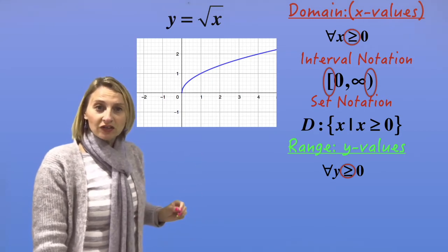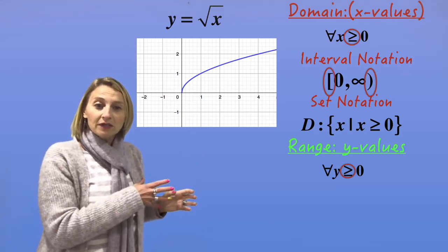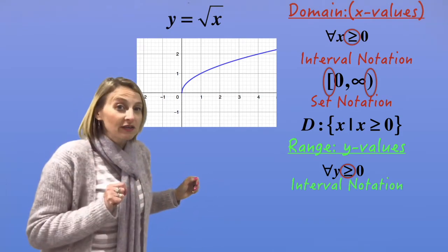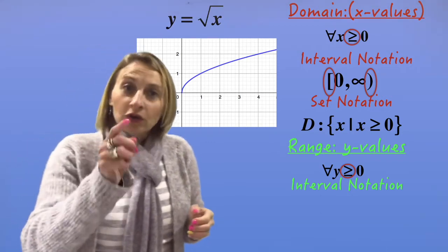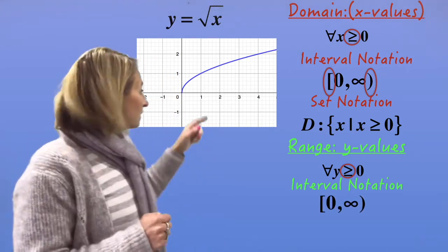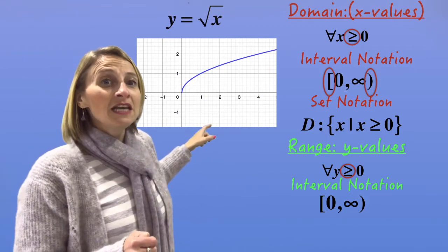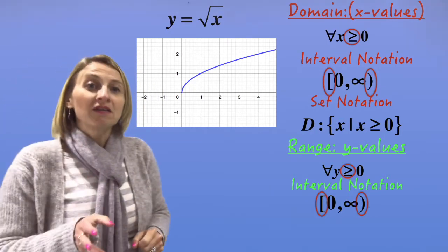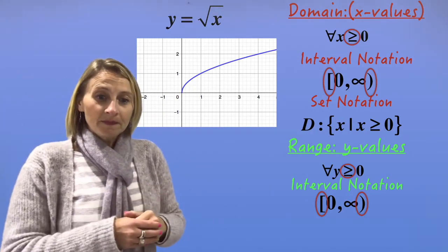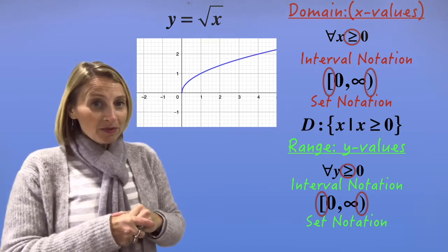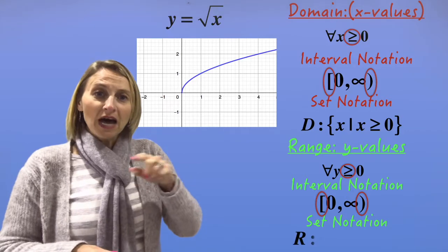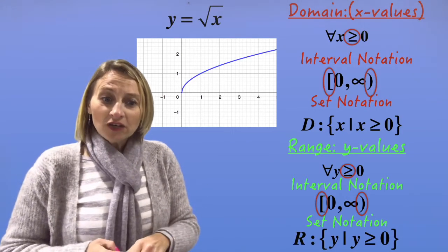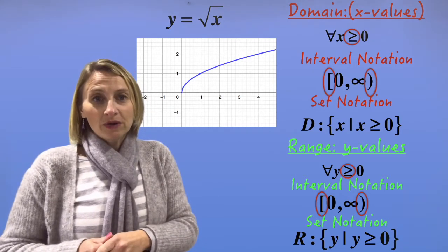Now we want to do interval notation — from something to something else. This one we want to go from 0 to infinity. Remember we want to include the 0. What do you do when you want to include it? You put a square bracket. So it's going to be a square bracket, 0 comma infinity. And then a round bracket afterwards. Why? Because it doesn't equal infinity — it keeps going. And then set notation — that's our curly brackets. We're doing the range, so R colon curly bracket, y such that — vertical line — y is greater than or equal to 0.